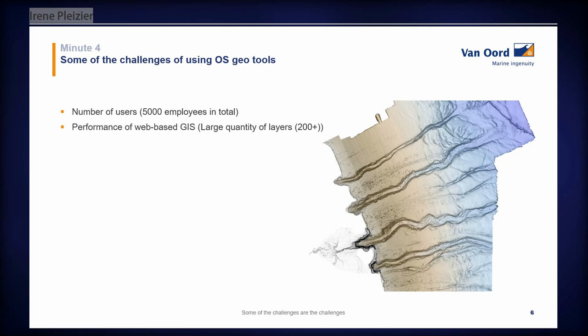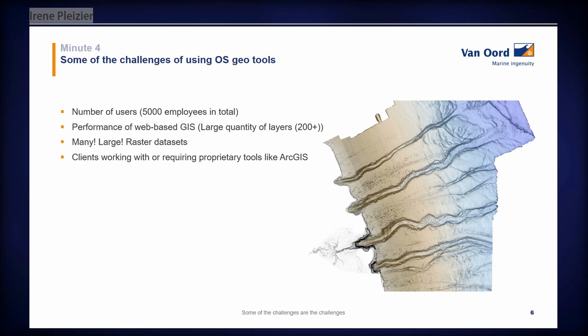How many people want to request large data sets at the same time? We have large quantities of layers that are replaced like every day — new designs, new survey data — so we need really fast tools to process that and make them available again. Many large raster data sets are always a problem. We use open source geo preferably, but the world is not only open source geo, so we also face challenges with clients that require non-open-source data formats, and how we deal with that.